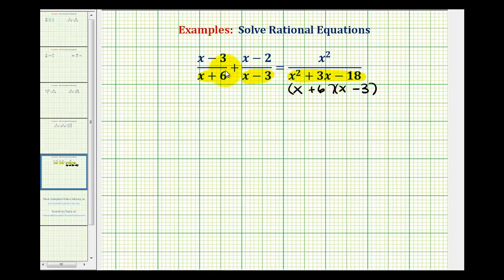Now that our denominators are factored, we should be able to recognize that the least common denominator would be the quantity x plus six times the quantity x minus three.